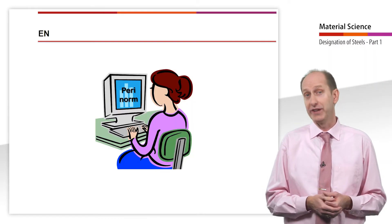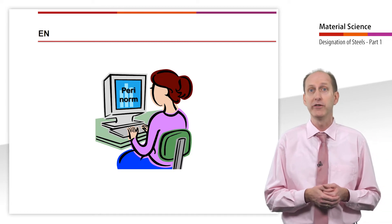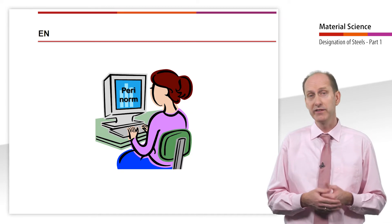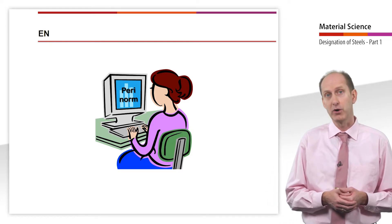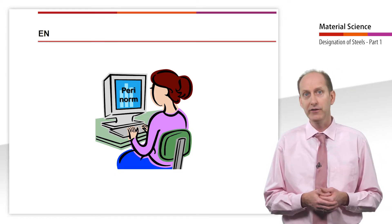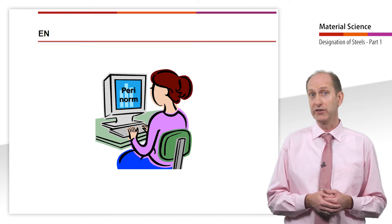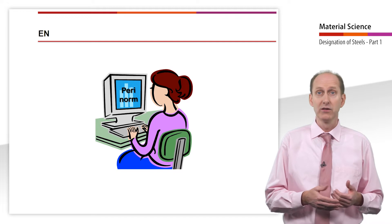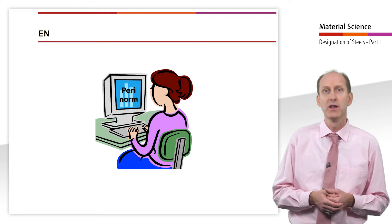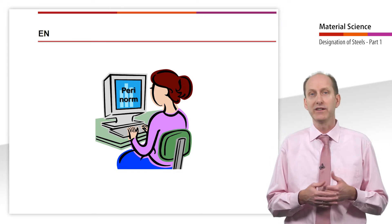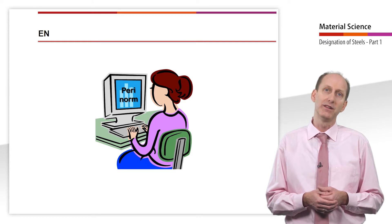But how can you get hold of the standards? Many universities provide free access to the PERINORM database. In this database you can enter the number of the standard into the search box document number and search for the respective standard. All valid standards can be displayed, read, saved and if needed printed. For example, we can find the definition of steel we have just seen in the DIN EN 10020 standard.